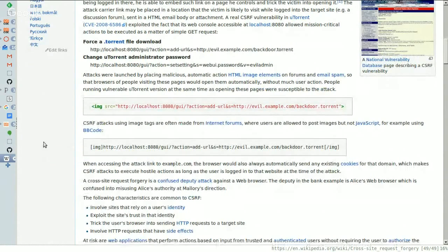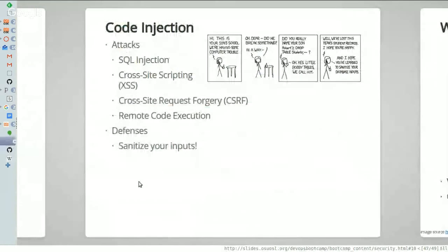That's the idea behind a cross-site request forgery — it's a lot of steps, but it's also really hard to protect against. As a user, you put a lot of trust into the websites you visit, and it's pretty much impossible to know without looking through the raw HTML of every web page which ones have a malicious image or link and which ones don't. Really the secret is just to not have admin privileges on anything — though of course that's not always possible. Cross-site request forgery is a nasty attack.